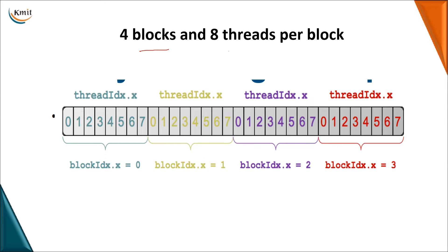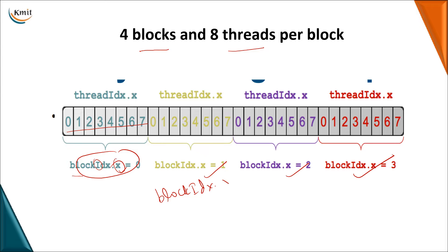Now having seen block and thread, let's look at how they are organized. Assume it is organized as a one-dimensional array where you have four blocks: block 0, block 1, block 2, block 3. Each block has 8 threads internally, numbered 0 to 7. If I want to know the ID of the block, I use blockIdx.x. Since it is one-dimensional, we only use blockIdx.x. Each block will be given an ID starting from 0 to 3. Similarly, each thread is identified uniquely by threadIdx.x, ranging from 0 to 7.